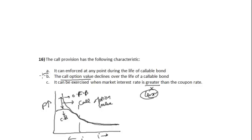So the correct option is option B: the call option value declines over the life of a callable bond.